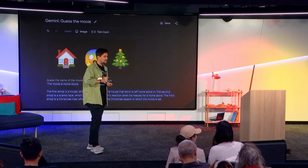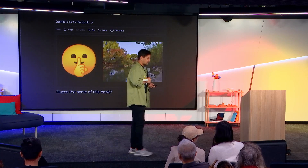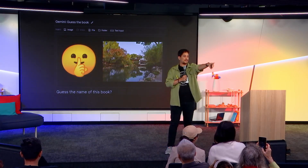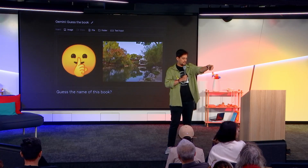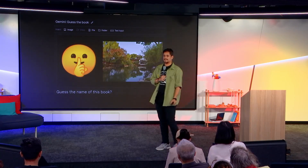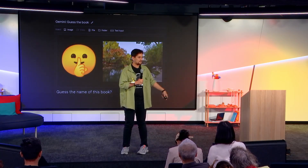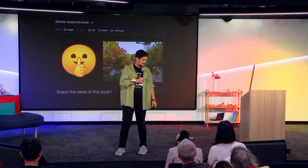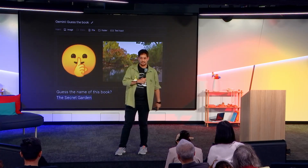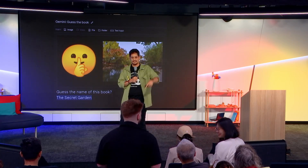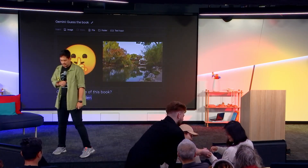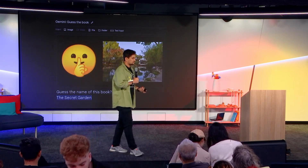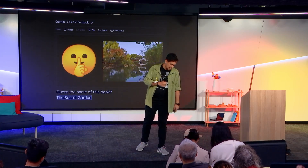Next question — please don't blur out the answer or nobody gets anything. It's a book. The answer is The Secret Garden, so she gets something — brilliant. We didn't ask Gemini to explain why it thinks it's The Secret Garden, so it didn't tell us. As simple as that.